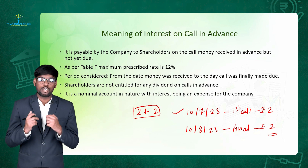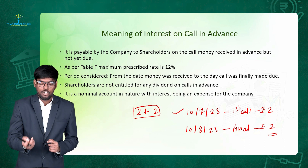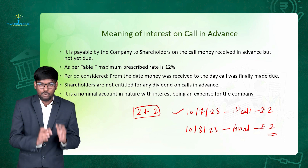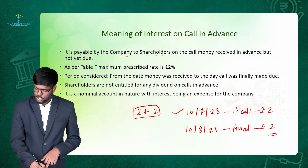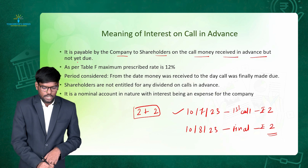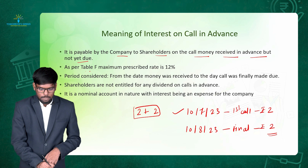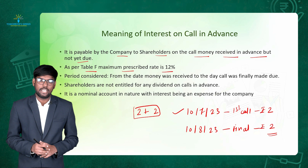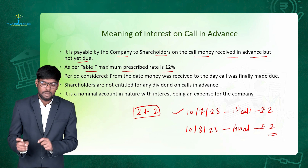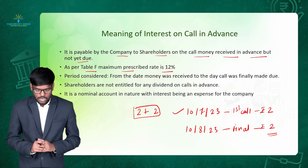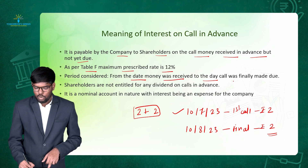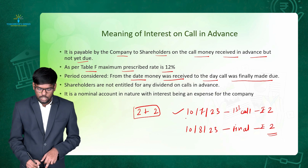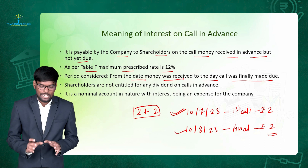It is the liability — or responsibility — of the company to make payment of interest on that 2 rupees which the company is using before the due date from the shareholder, and this is known as interest on call in advance. It is payable by the company to the shareholders on call money received in advance but not yet due. As per Table F, the maximum prescribed rate is 12%, so as per the Companies Act 2013, the company has to pay maximum 12% interest on call in advance. The period is from the date the money was received to the date the call was finally made due — in this example, from 10th of July to 10th of August, so interest is calculated for one month.